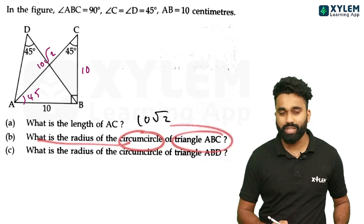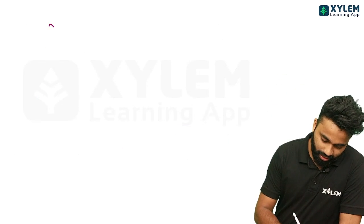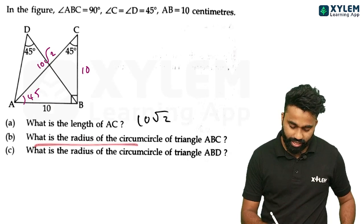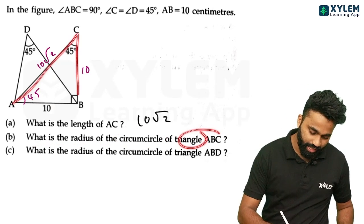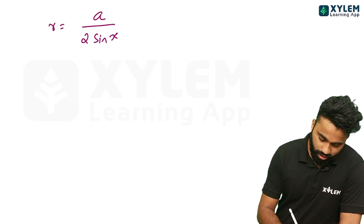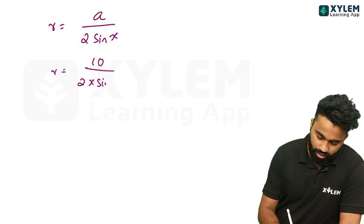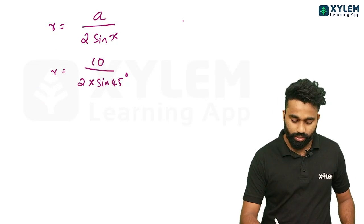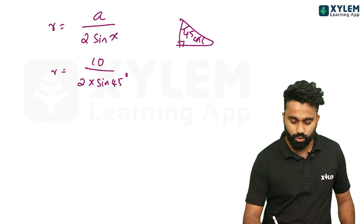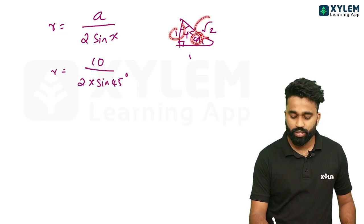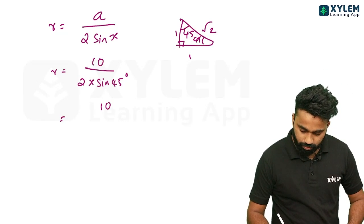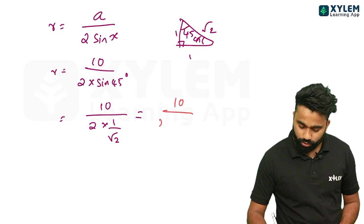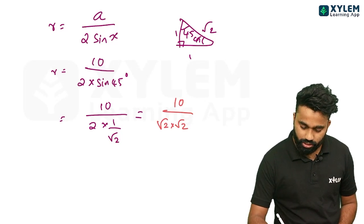What is the radius of the circumcircle of triangle ABC? R equals a by 2 sin x. R equals a by 2 sin 45. This is the value. 45 is 45. 1 is root 2. We have root 2 into root 2, that is equal to root 2.